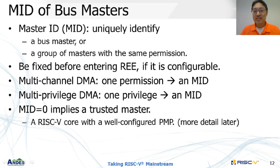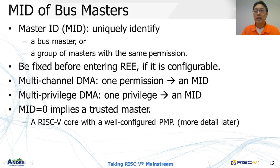To check a transaction, a checker — PMP or IOPMP — should know who issued the transaction. That is, the issuer of the transaction. While PMP uses process mode to distinguish who issued a transaction, IOPMP uses Master ID, or MID, to identify the one issuing a transaction. MID represents one or a group of bus masters with the same permission. However, in some cases, one bus master may have two or more different permissions.